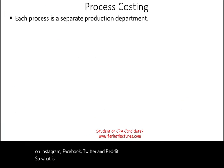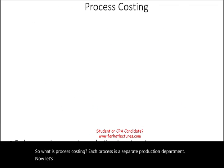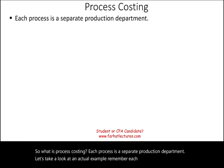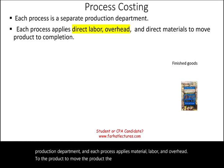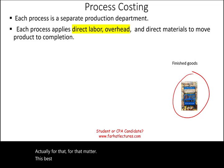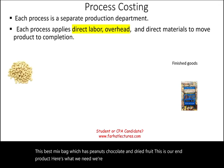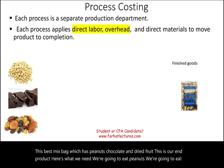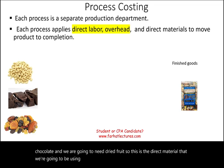Each process is a separate production department, and each process applies material, labor, and overhead to the product to move it toward completion. For our example, we're going to be manufacturing a best mix bag containing peanuts, chocolate, and dried fruit. This is our end product. The direct materials we will use are peanuts, chocolate, and dried fruit, added in separate departments throughout the process.